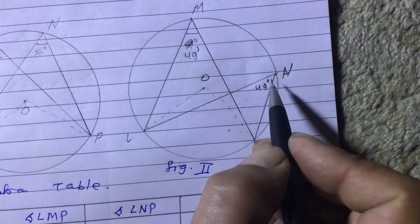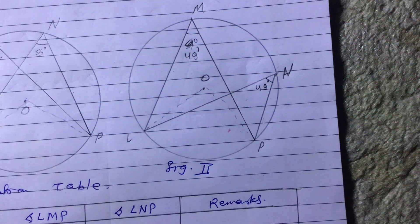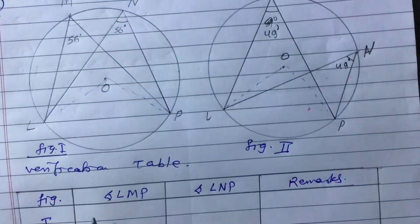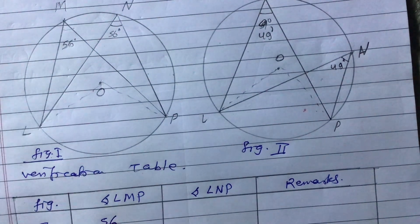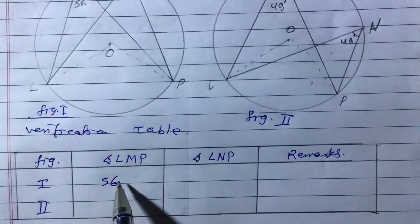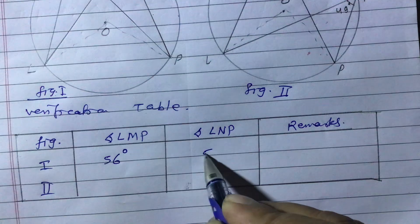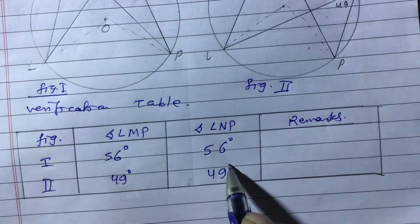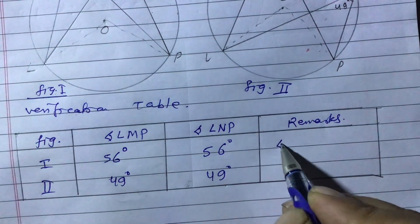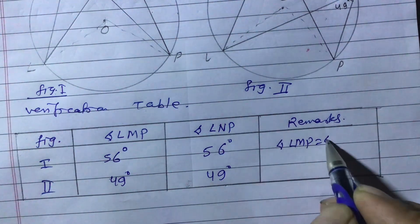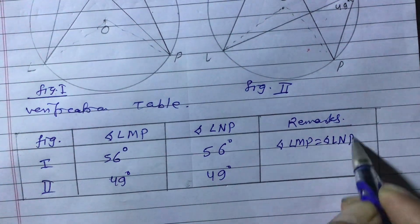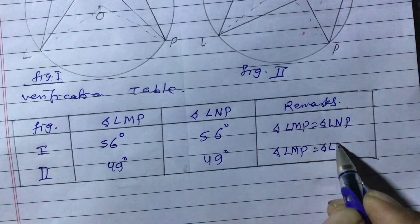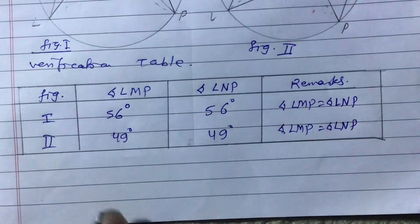Both figures give equal inscribed angles: 56° and 56° in figure one, 49° and 49° in figure two. We write these in the table. Remember to write the degree symbol — write 56 degrees and 49 degrees. In the remarks column, write: angle LMP equals angle LNP.